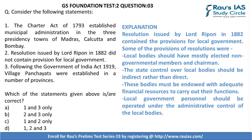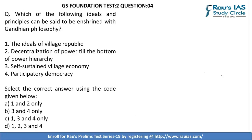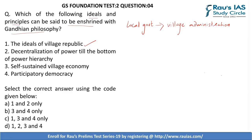Question 4 is asking: which of the following ideals and principles can be said to be enshrined in the Gandhian philosophy? The focus is on the principles of local government which Mahatma Gandhi wanted to be employed to manage village administration. The first is the ideals of village republic — this is correct. The system of governance at village level should function as a republic where the head of village administration is elected by the people.